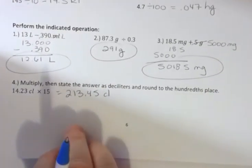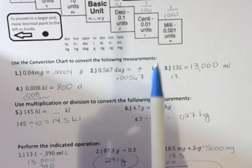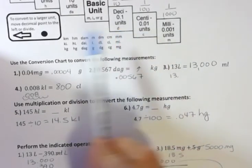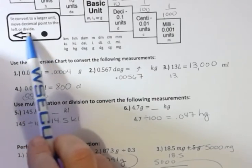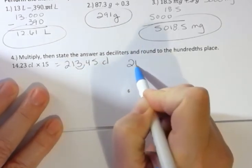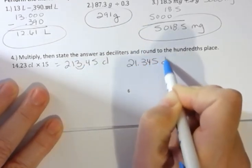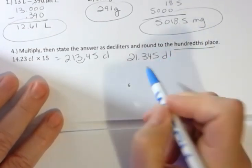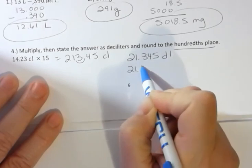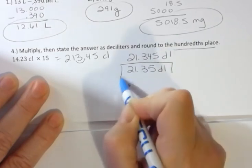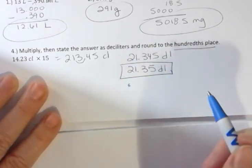But they asked to give it as deciliters, so then I'm going to make that conversion. What's the conversion here? Well, I'm going from centiliters to deciliters, so I'm actually going backwards one. That means I'm going to divide by 10 or just move the decimal point one place. If I move the decimal point over one place, I get 21.345 deciliters. But they also ask me to round to the hundredths place, so that would be 21.35 deciliters.